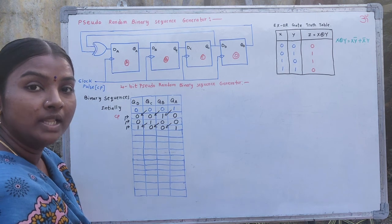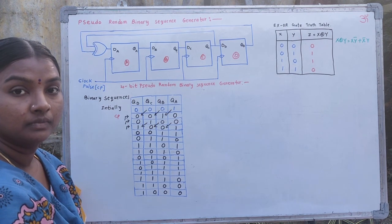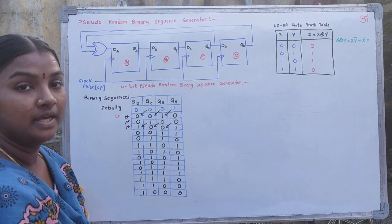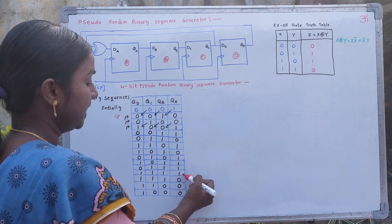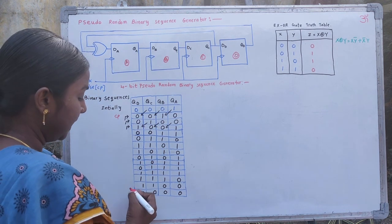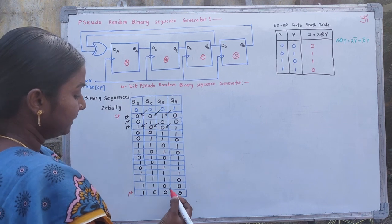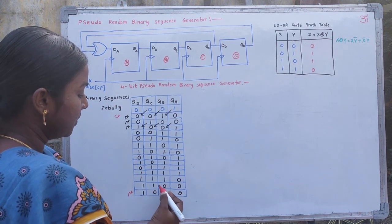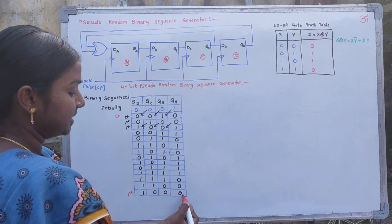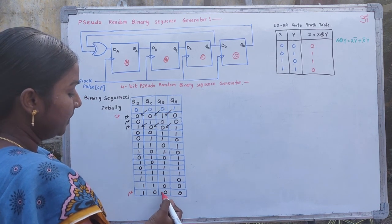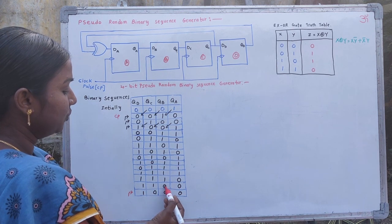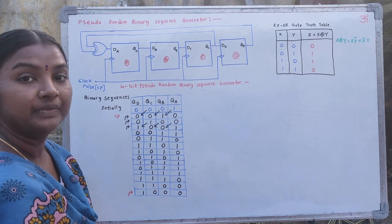By applying clock pulses, we obtain all the different binary states. After applying the 14th clock pulse, the QA bit depends on QC and QD being 1 and 1, which gives QA as 0. QB, QC, and QD depend on the previous bits of QA, QB, and QC respectively.